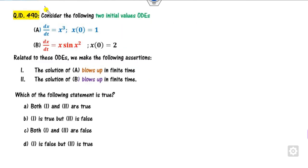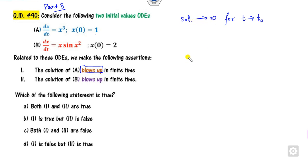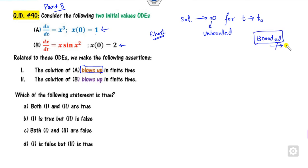Now question 490, part B — only one correct answer. Two differential equations are given with initial conditions, and we must check which solution blows up. Blow-up means the solution goes to infinity at some finite time T₀. We check which solution is unbounded. The shortcut: if we can show a differential equation's solution is bounded, it can never go to infinity.